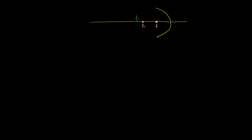Let's put an object beyond the center of curvature — so let's put an object here. The convention is to use an upward pointing arrow to show an object, and we use the tip of the arrow to show the top of the object; that's usually where we trace our light rays from. When dealing with parabolic mirrors, it's easiest to show just two light rays: one that goes parallel to the principal axis, and one that goes through the focus, because you know what's going to happen to each of those when they reflect.